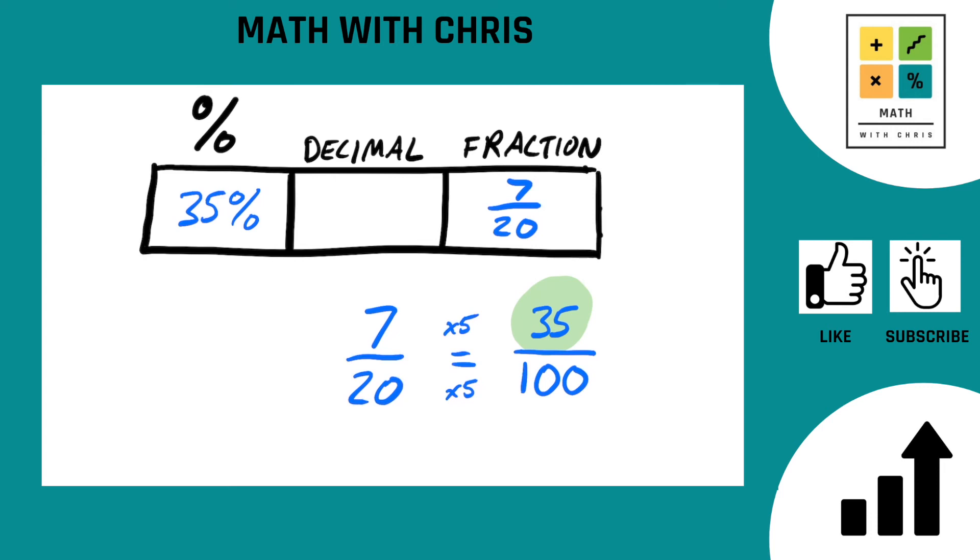And now to find the decimal, we take our percent, 35%, and we move the decimal over two spots to the left. One, two, and we end up with 0.35.